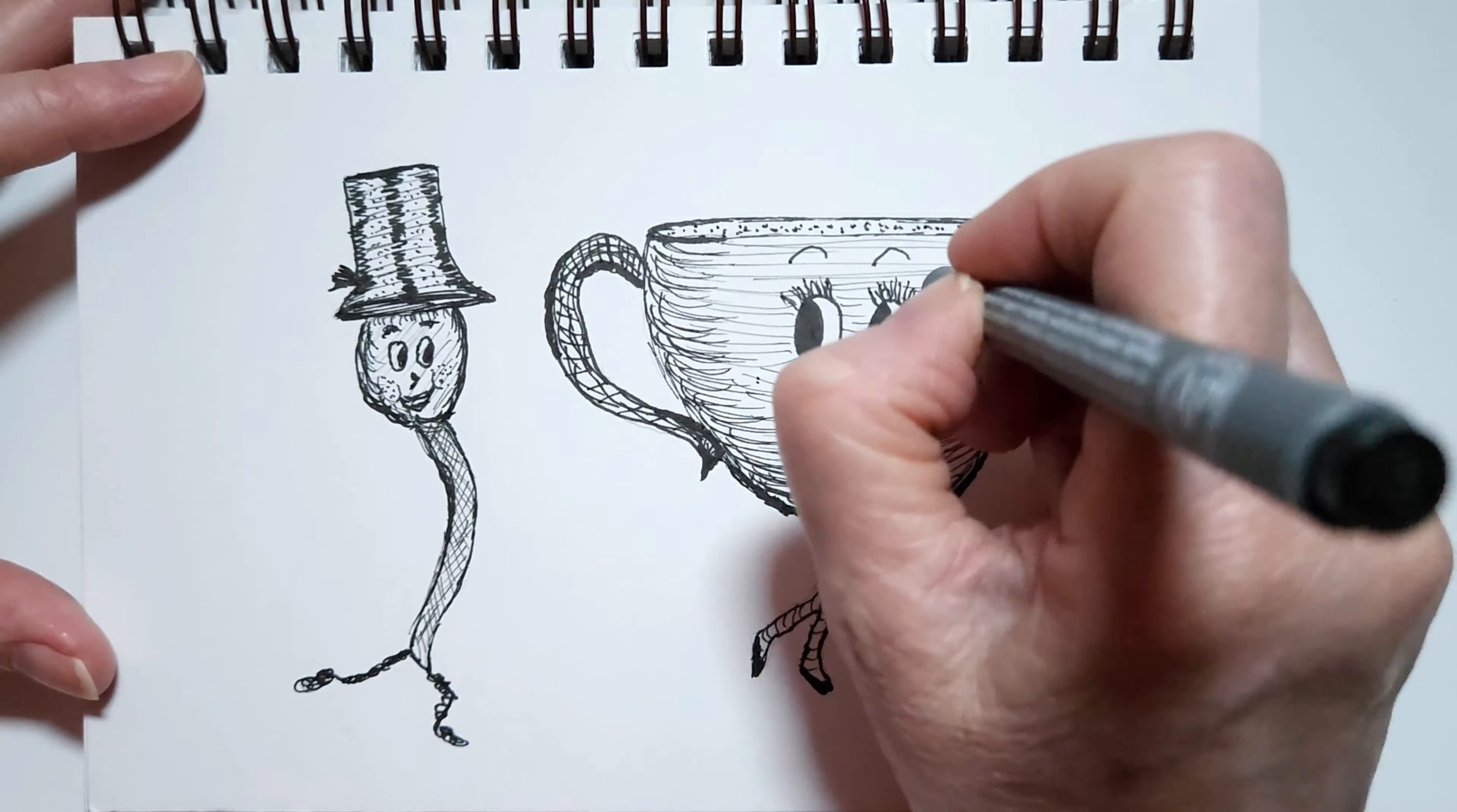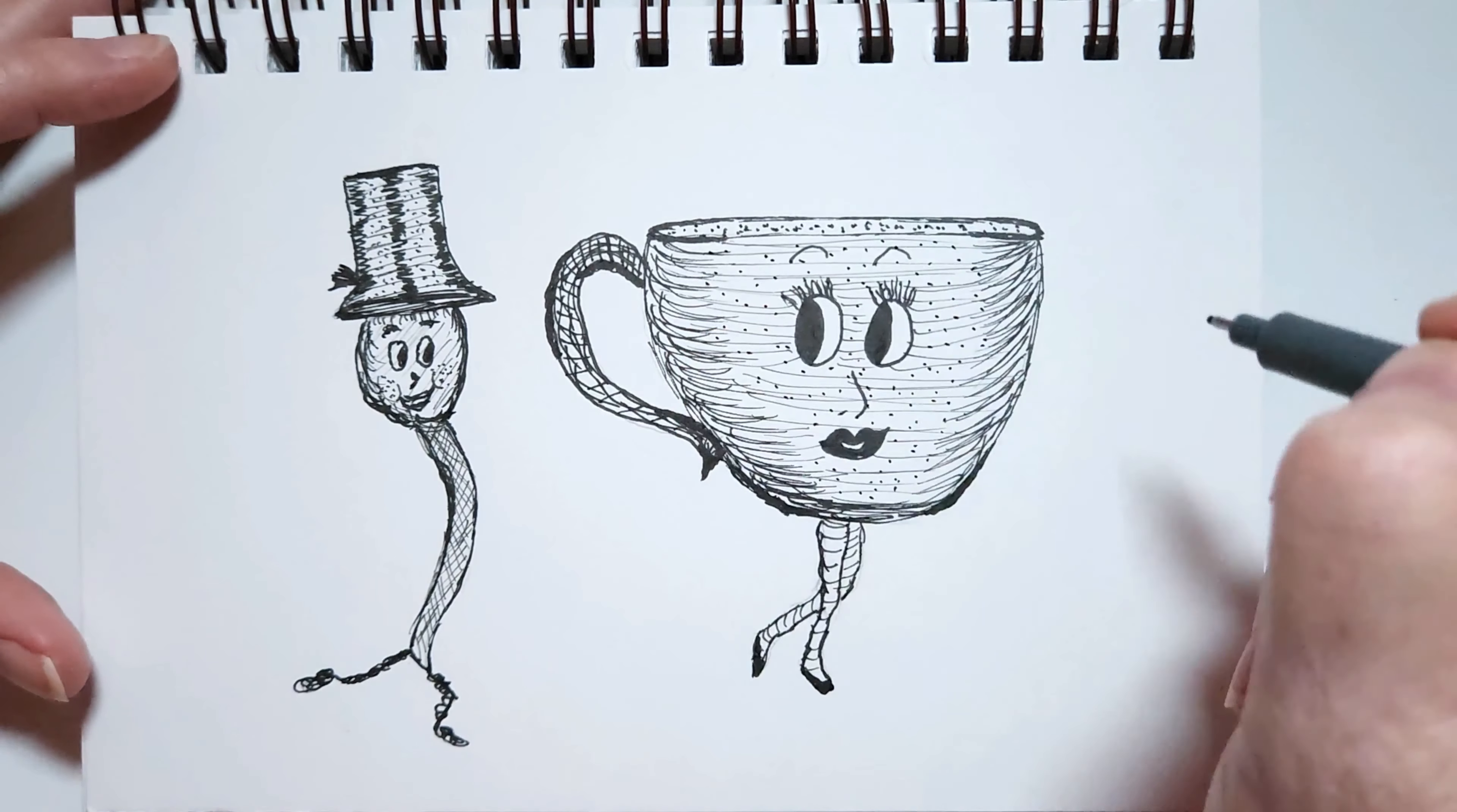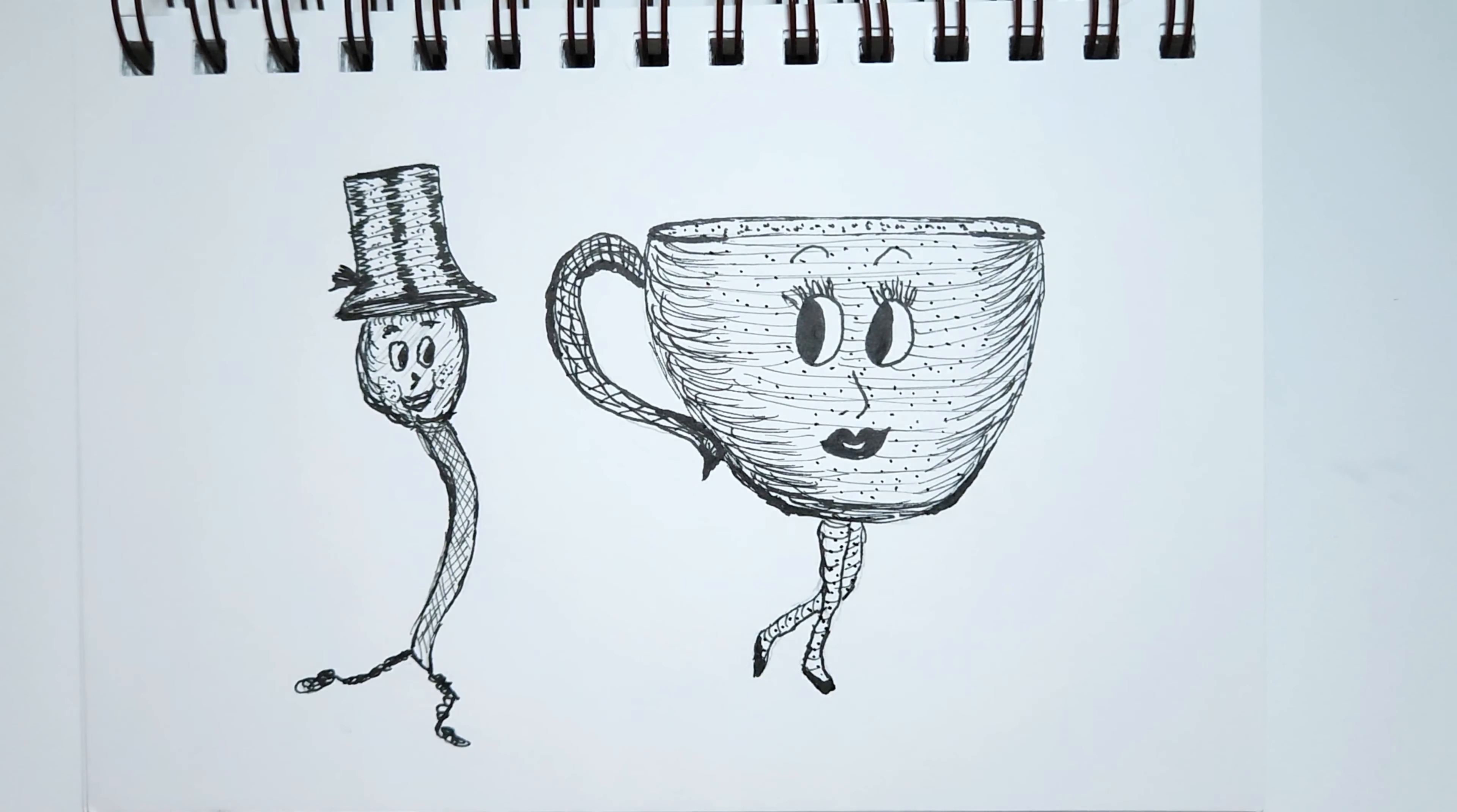She's got freckles. This is extremely relaxing to do dots like this. I'll do some dots in her legs too. There we go. So hey diddle diddle the cat and the fiddle, the cow jumped over the moon, the little dog laughed to see such a sport and the dish ran away with the spoon. There we go.